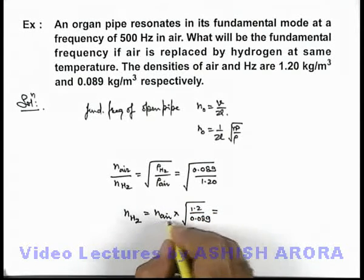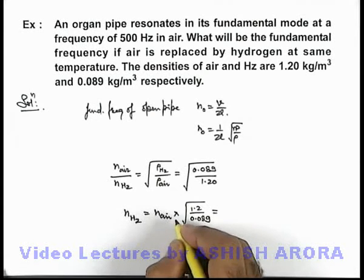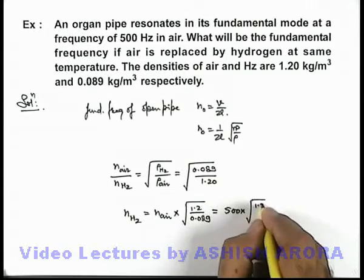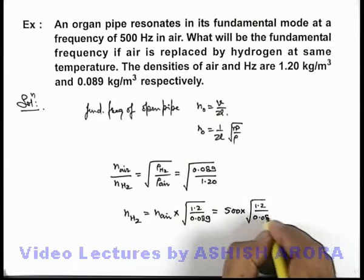And it is given that frequency when air is filled in the pipe is 500 hertz, so it is 500 multiplied by root of 1.20 by 0.089.